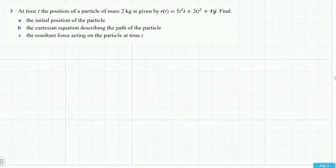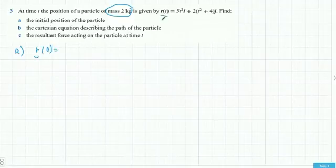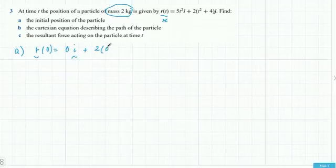This is a nice question — it's about using the mass to find the resultant force. We'll go through all the questions bit by bit. The first part asks for the initial position, which is when t equals 0. Substituting zero gives 0i plus 4j times 2 equals 8j, so the initial position is at 8j, or as coordinates, (0, 8).